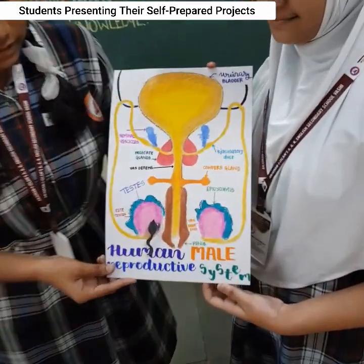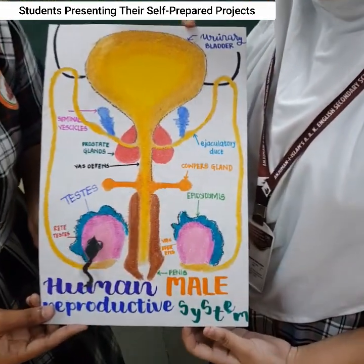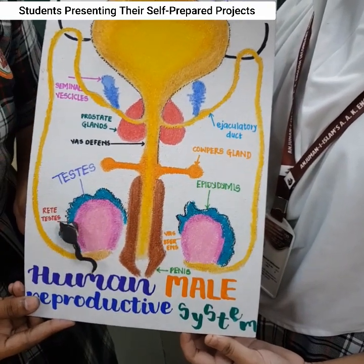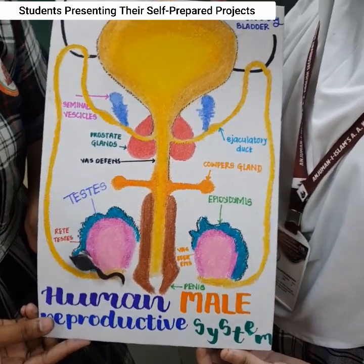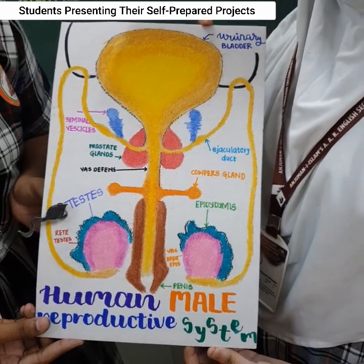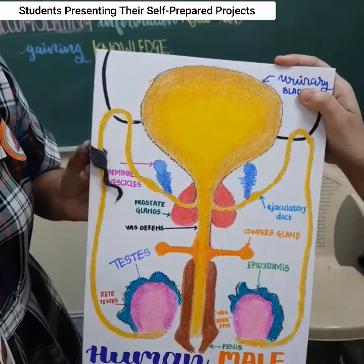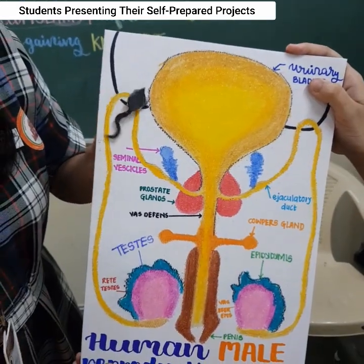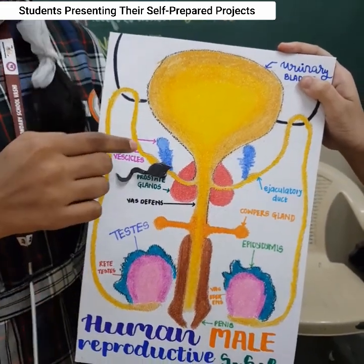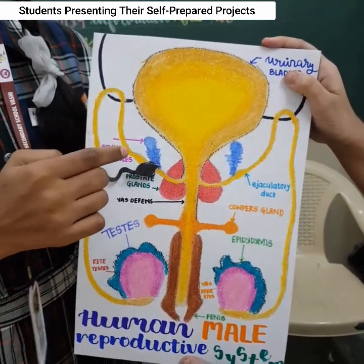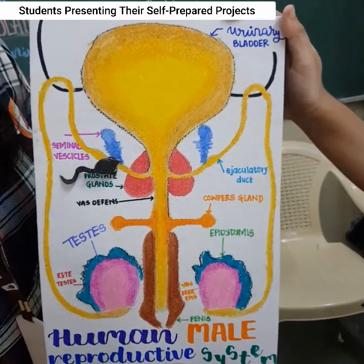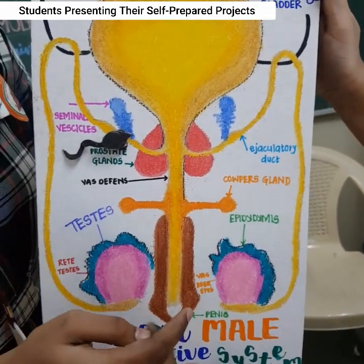First, it will pass through the rete testis, after which it will go into the epididymis. Once it reaches the epididymis, it will pass through the ejaculatory duct. Once it reaches the ejaculatory duct, the seminal vesicles will secrete their secretion into the ejaculatory duct.